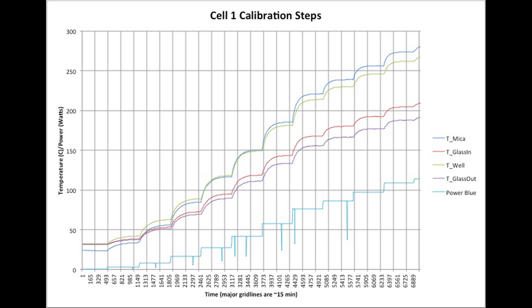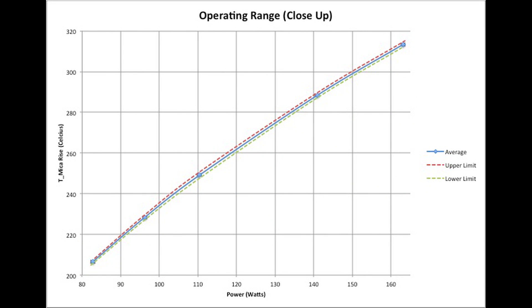Now we have an idea of how each point changes with the power level. At the conditions we plan to run the experiment at, we did three calibration runs and calculated the 95% confidence interval.